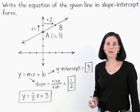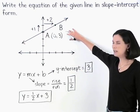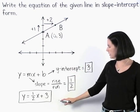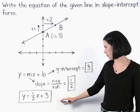So the equation of the given line in slope-intercept form is y equals one-half x plus three.